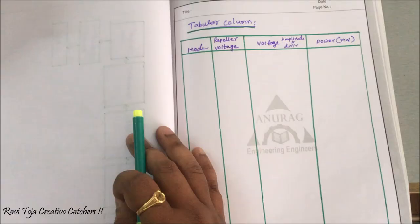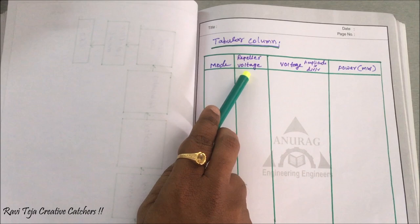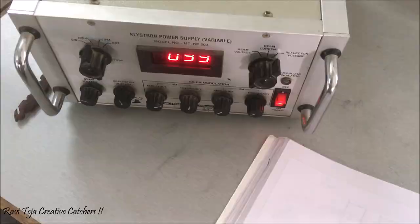The tabular column has columns for: mode number, reflector voltage, amplitude multiplied by divisions per volts, and the power value calculated from those readings. Now let us switch on the klystron power supply and begin recording.